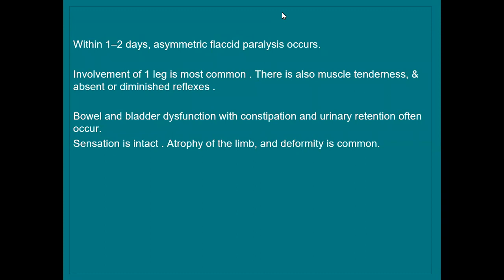There is also bowel and bladder dysfunction with constipation and urine retention, often occurring in the acute phase. Sensation is intact — the sensory nerve is not affected in poliomyelitis. This is an important distinguishing feature from other causes of acute flaccid paralysis. Due to disuse of the paralyzed limb, there will be atrophy over time, and deformity is common in the affected limb.